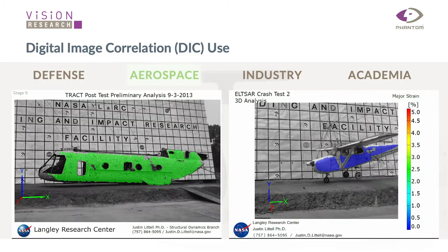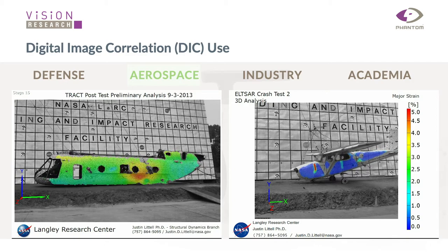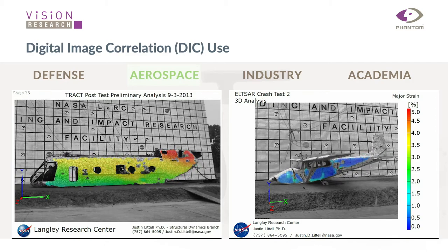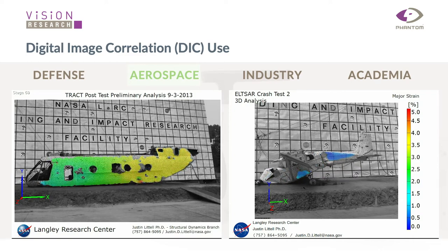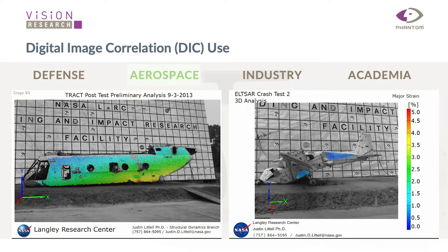The next area is aerospace. For a long time, the aerospace industry — for example, NASA — has been using Phantom high-speed digital cameras to characterize the strain and deformation of, for example, a helicopter on the left as it crash lands, and also a plane on the right. You can look at how the strain maps evolve during the crash.